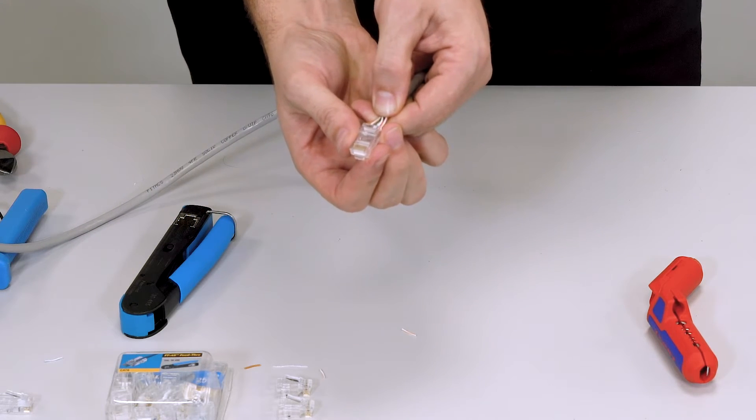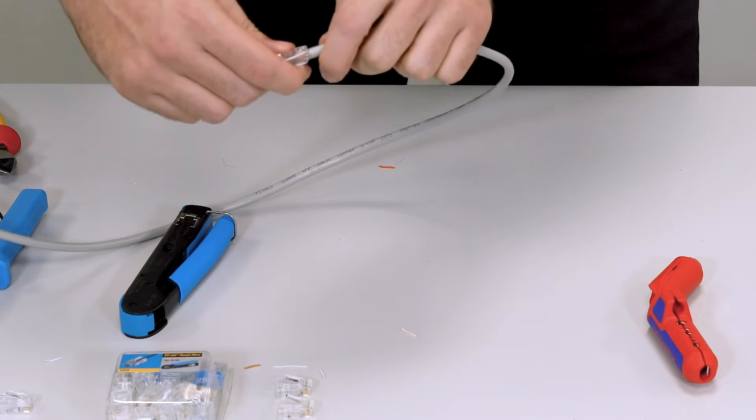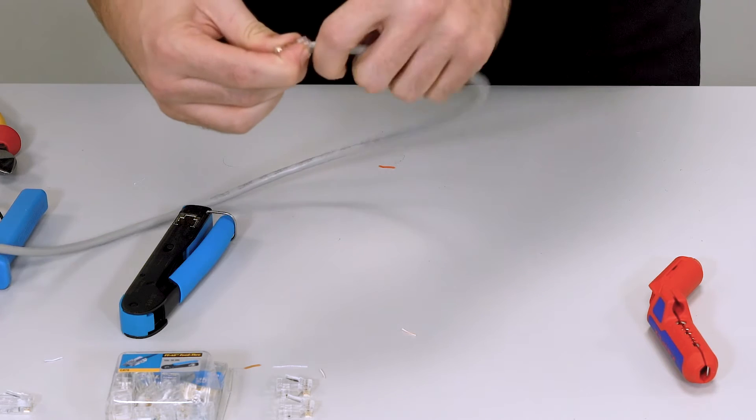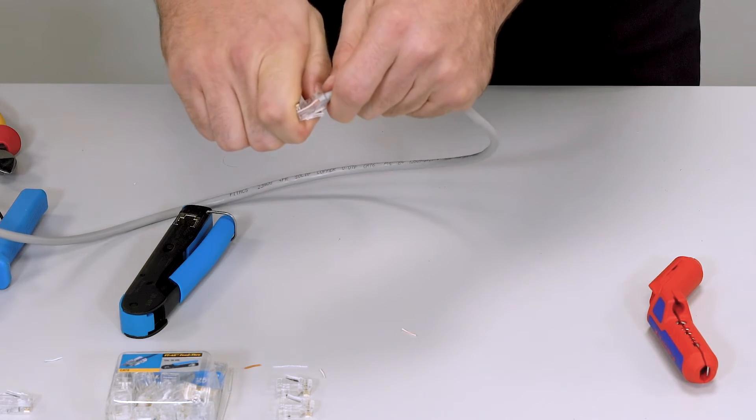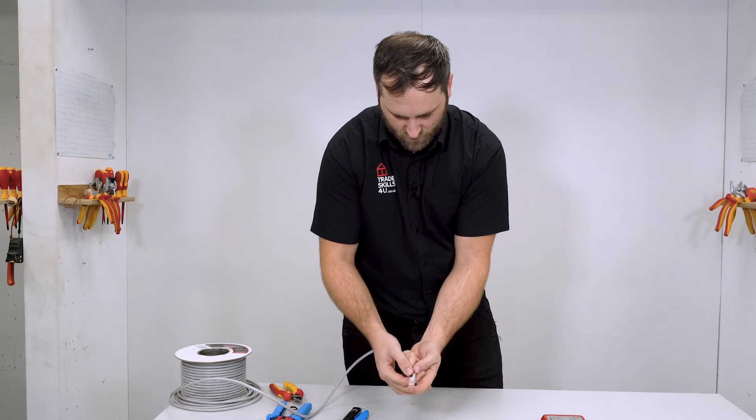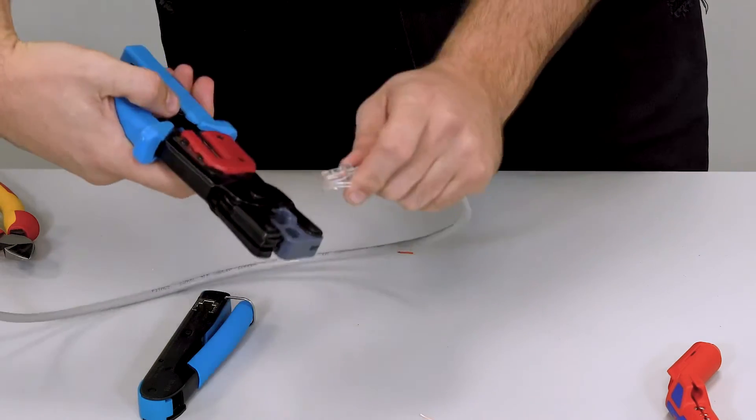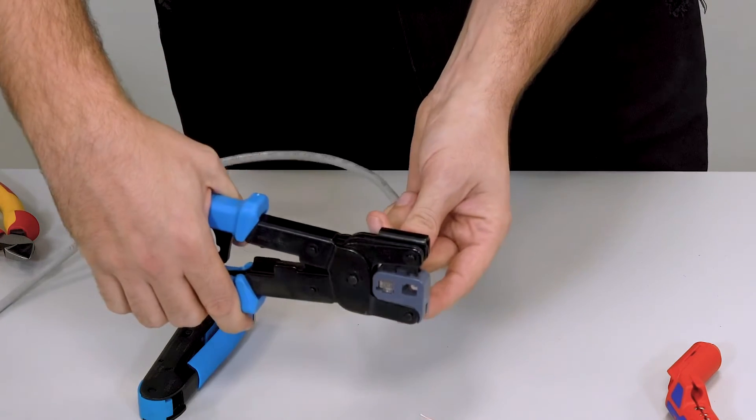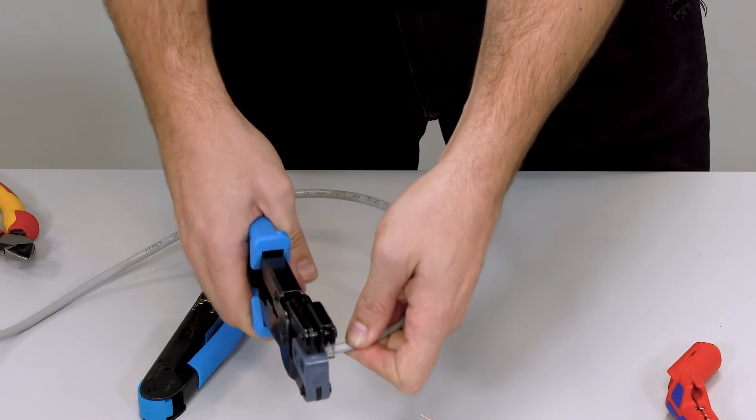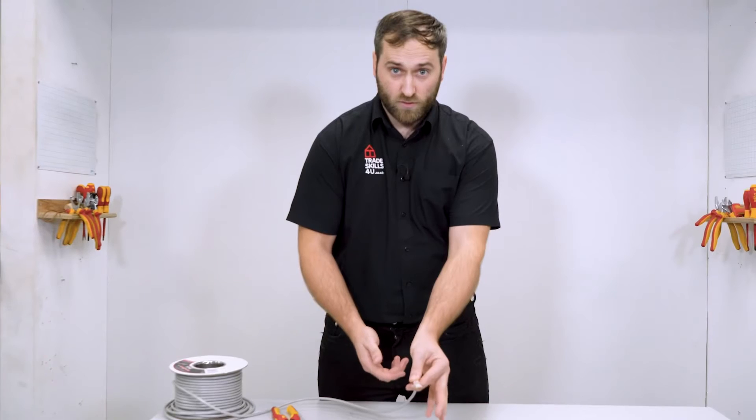I'll hold my RJ45 the correct way around, now going to push them in, making sure that it makes contact with the copper at the end. It's right in as much as I can get it. That looks good to me. Now I'm going to use my crimping tool. I place that in there, keep the cable compressed in, squeeze down, and that should be an RJ45 all made off.